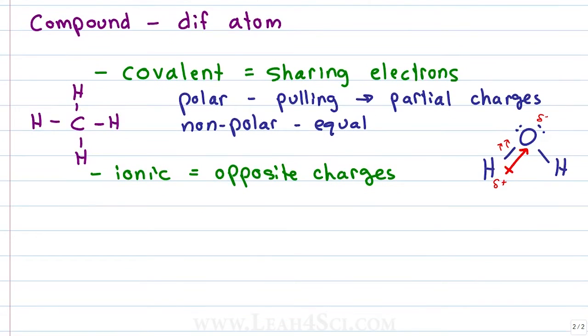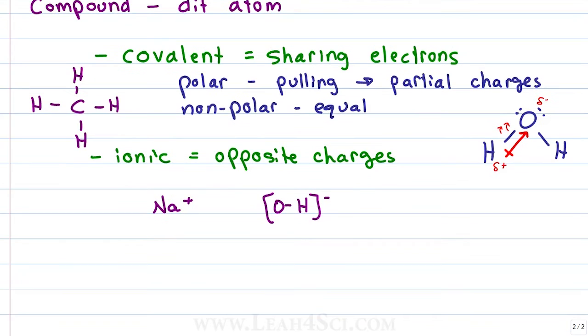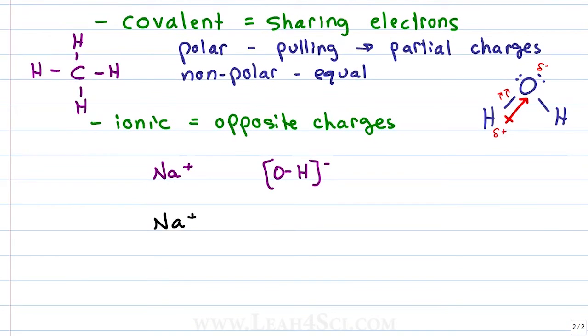Ionic compounds are made up of oppositely charged ions. This could be a single ion, like sodium with a positive charge, or a polyatomic ion—multiple atoms bound together with a net charge, like hydroxide, which is OH minus.